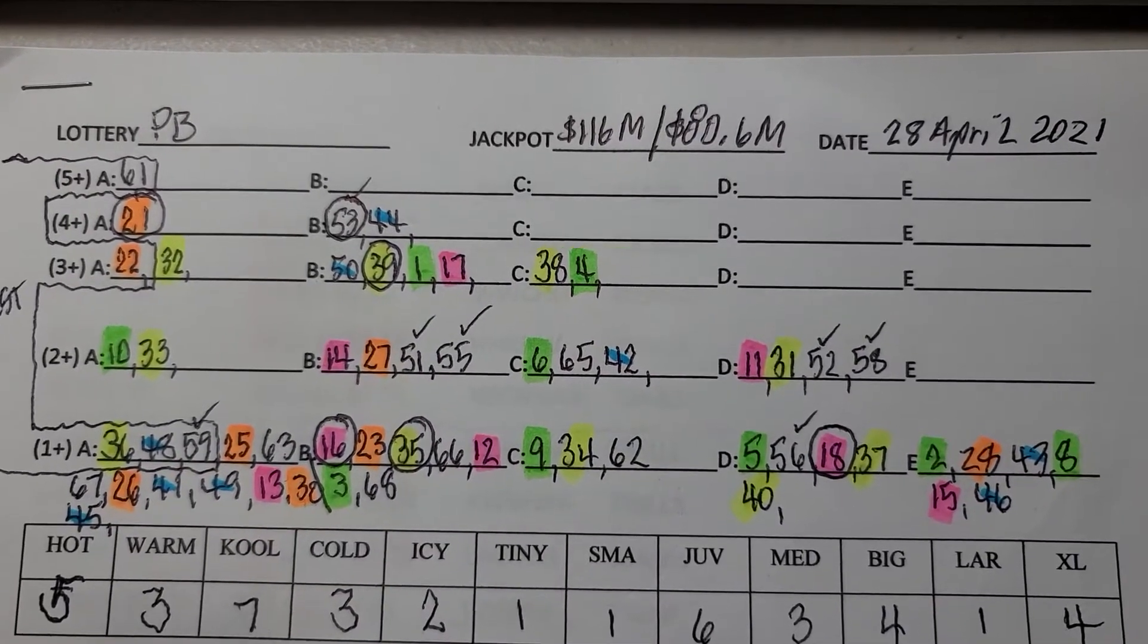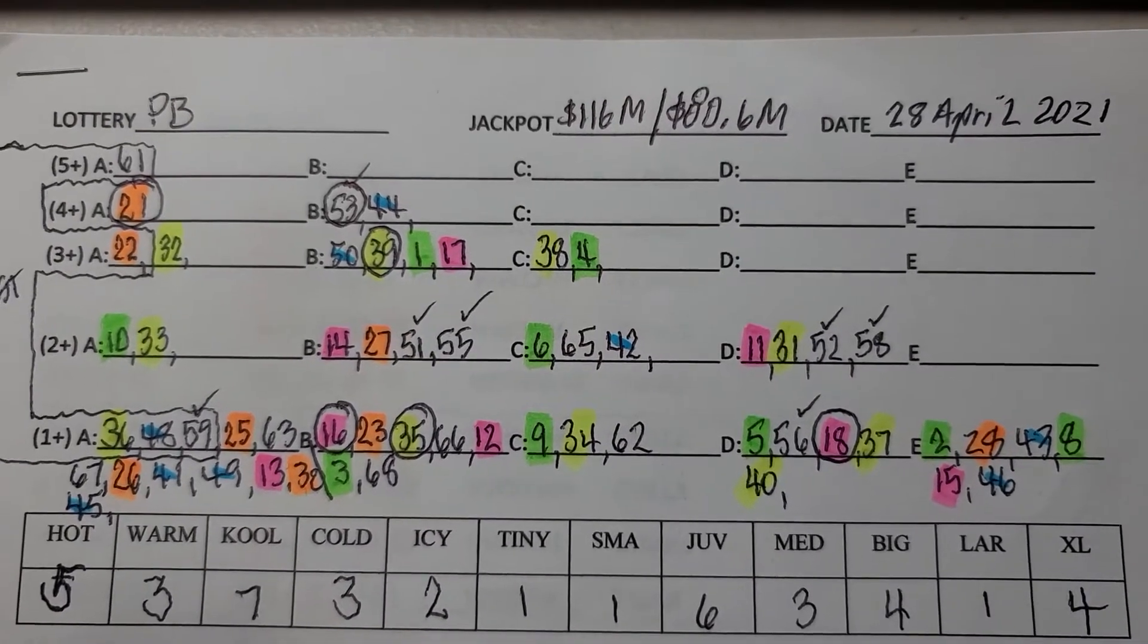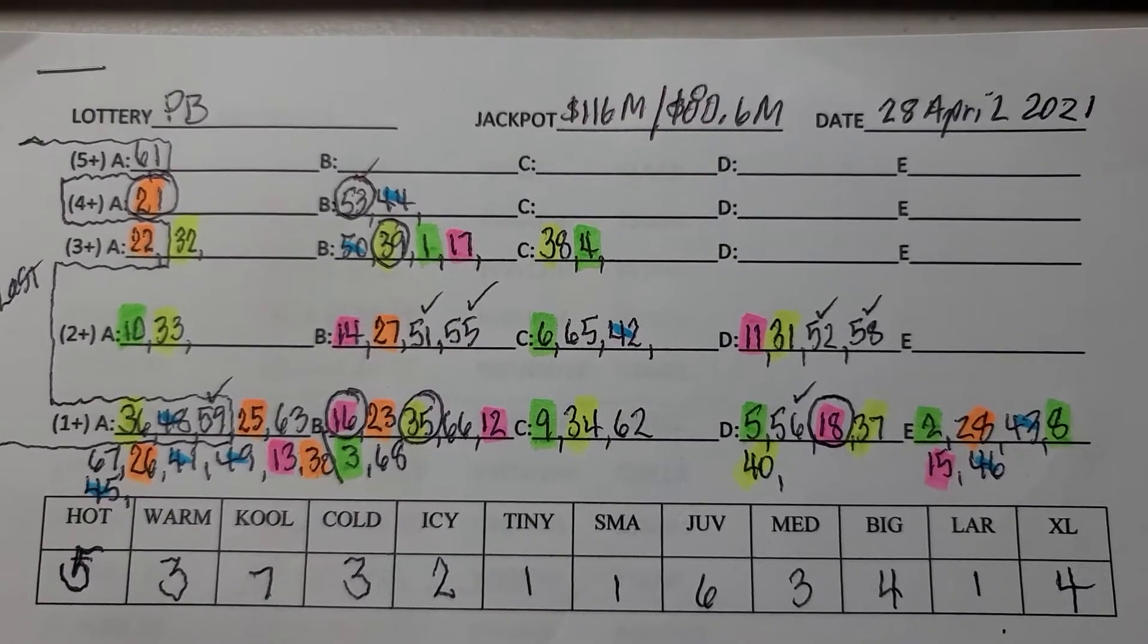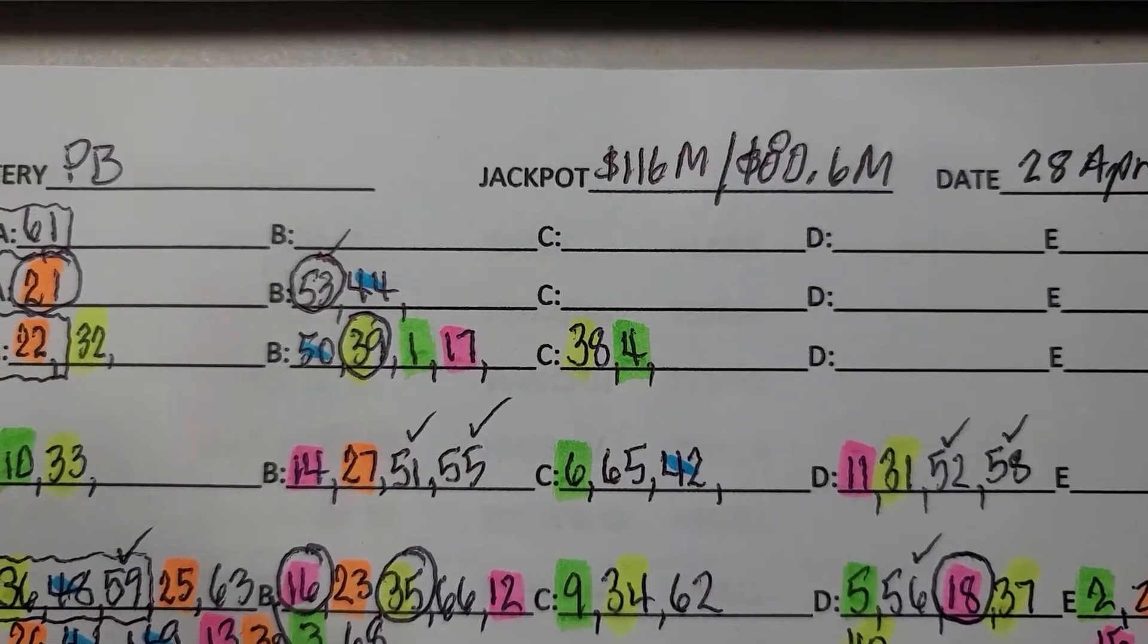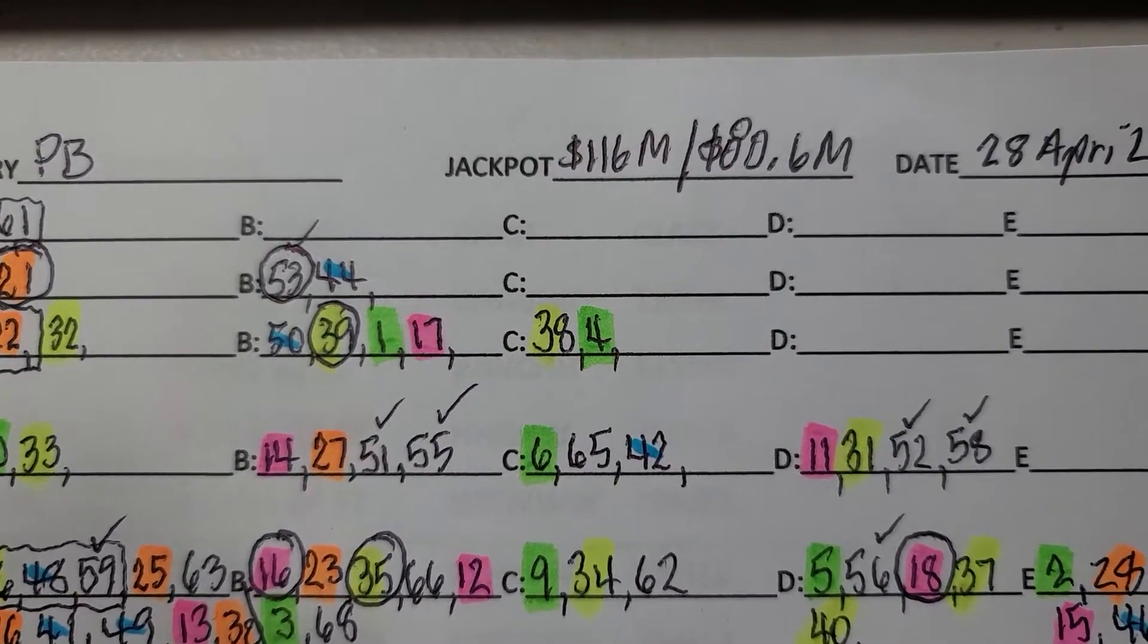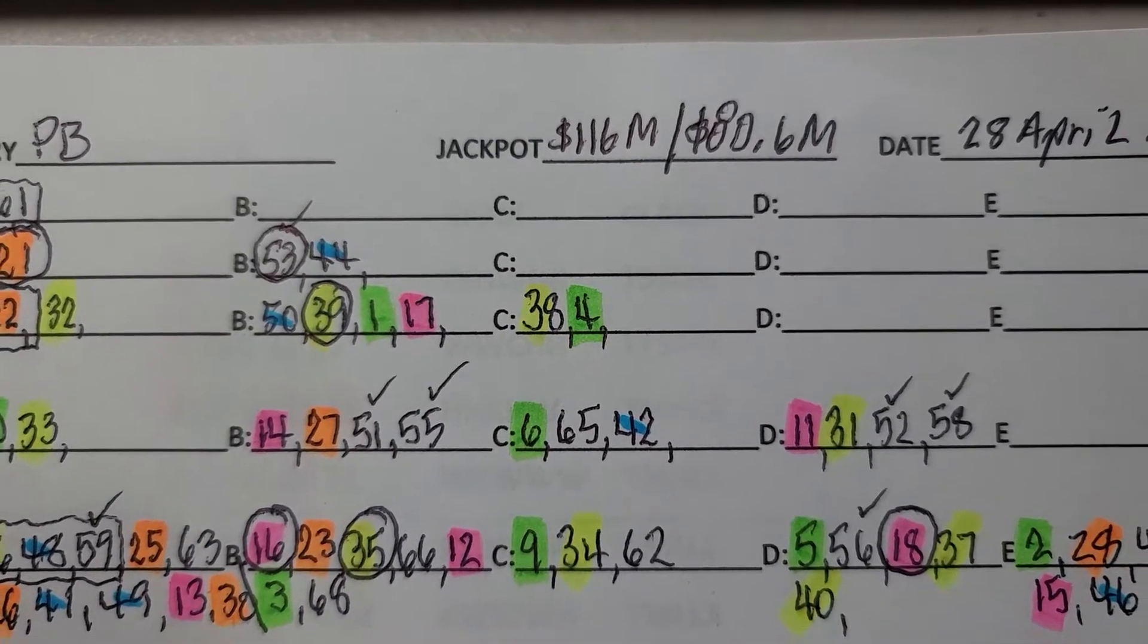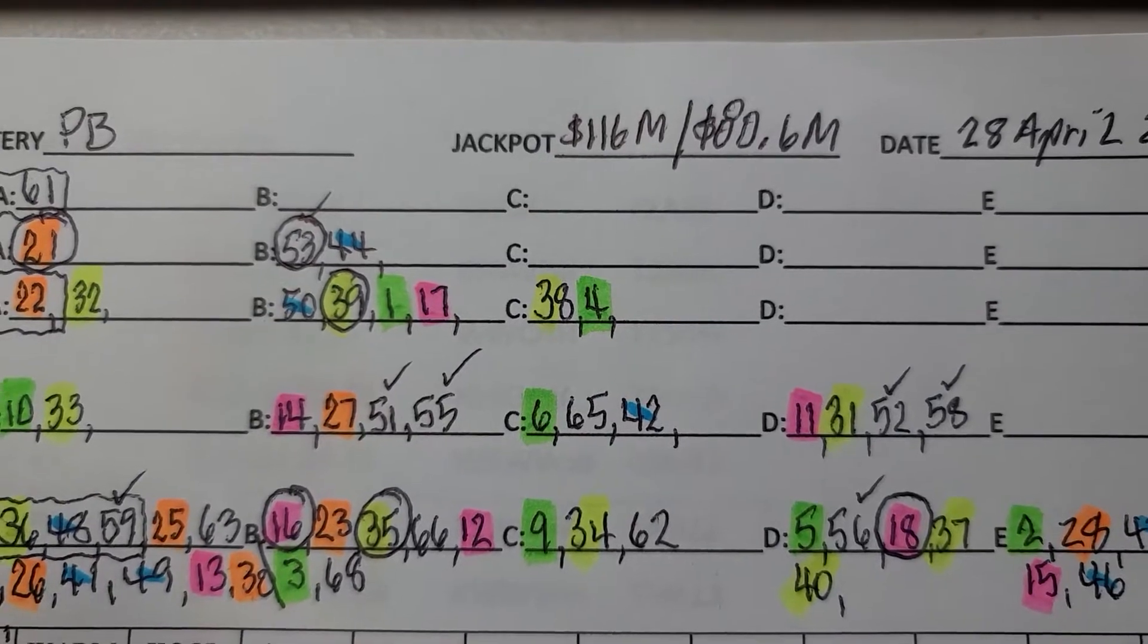Aloha everybody, this is Dave Wallace coming to you from Waihua, Hawaii and it's feedback time for the PowerBall which was just drawn today, the 28th of April 2021. A reminder, the jackpot was 116 million for the 30-year annuity and 80.6 million for the cash value, the cash out option.